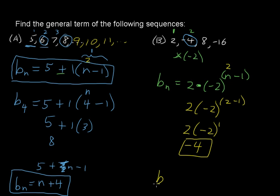So this general term then, b sub n equals 2 times negative 2 raised to the n minus 1 power. And that's one way, just one way to write the general term. There are other ways of writing those. I hope that helps.